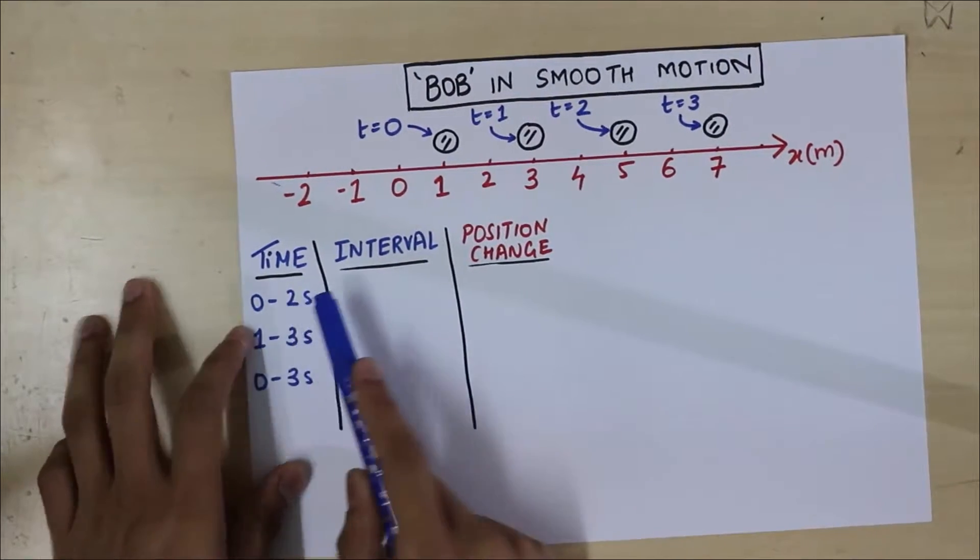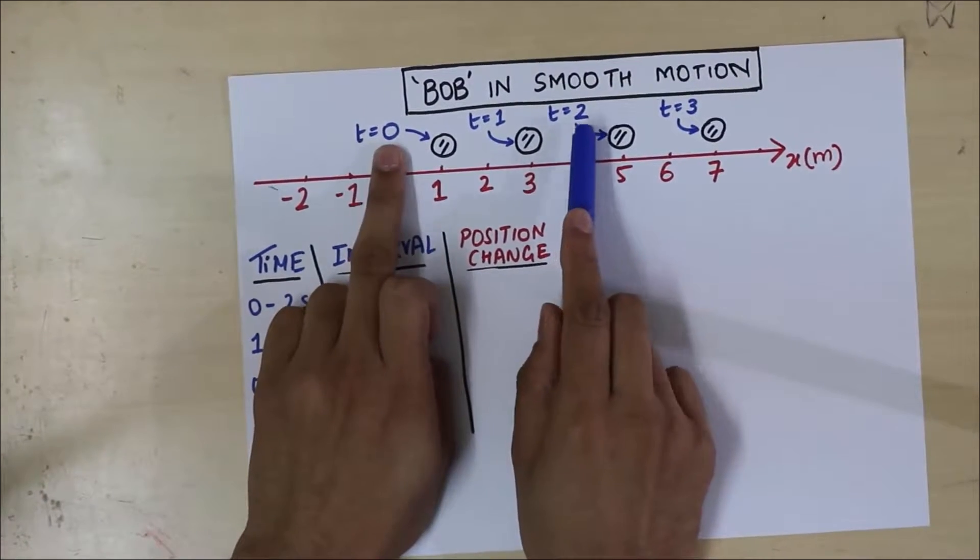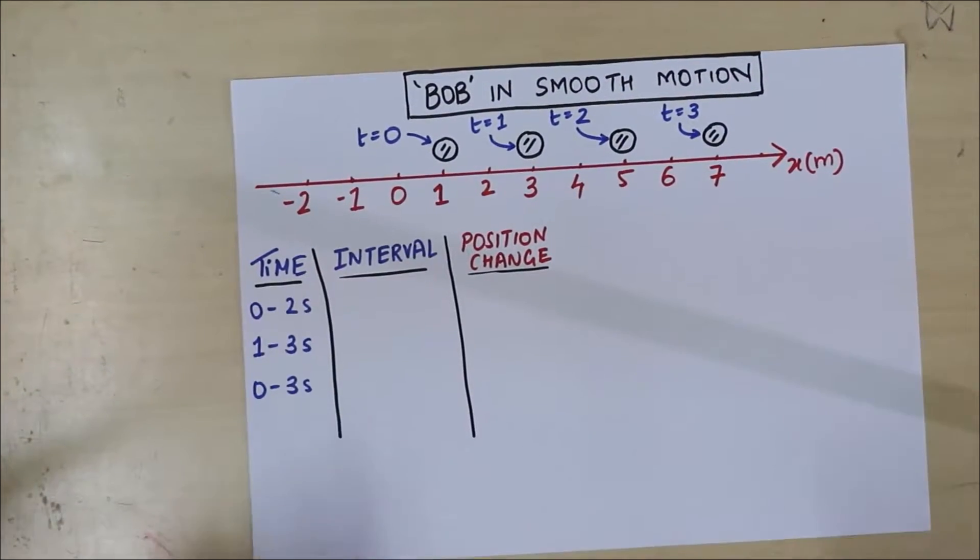Let's see. From 0 to 2 seconds, let's look at the situation from 0 to 2. What is the interval? Well, from 0 to 2 is 2 seconds, right? That's the time span.